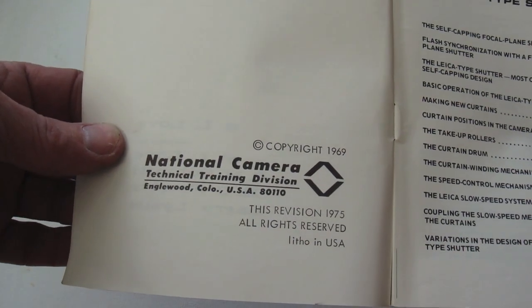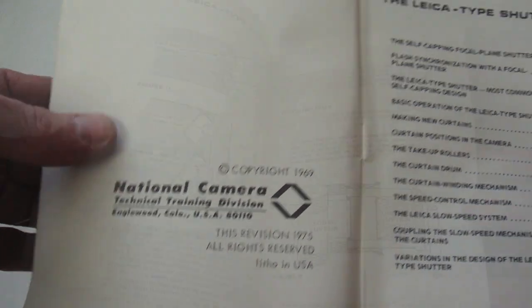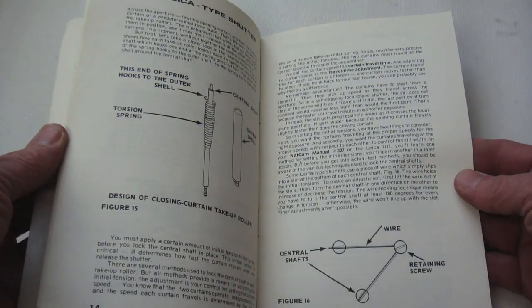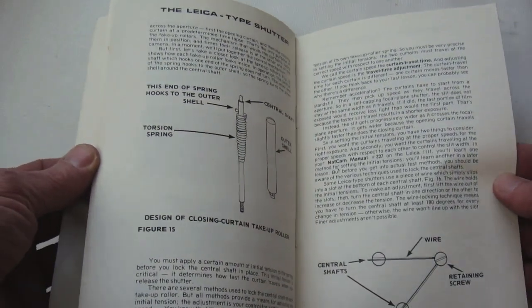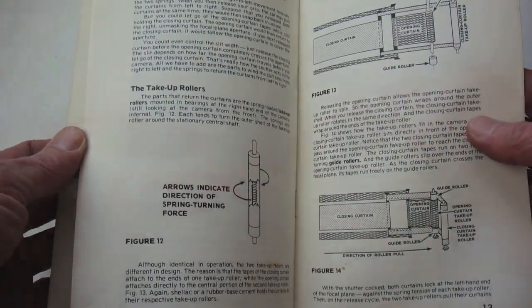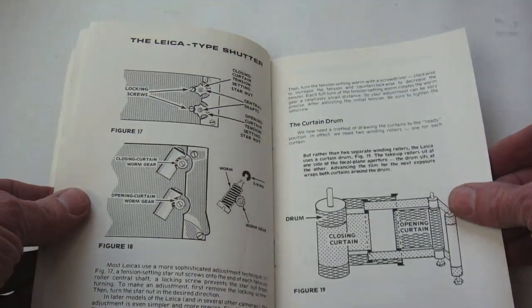This service manual for Leica type shutters, published by the National Camera Technical Institute, which is the publisher of Camera Craftsman magazine, gives an in-depth study and service procedures of Leica type shutters.